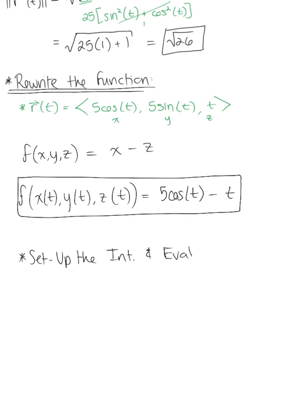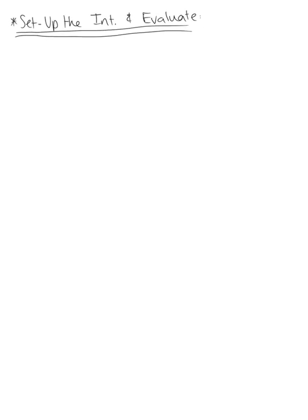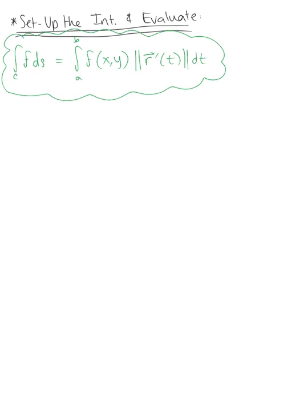And then evaluate. So let me make sure we have enough room here. So we're ready to take our line integral, our given line integral in terms of arc length, and convert this to its scalar value function form. So this is the conversion formula we're using. So here we started off where we were given the integral over c of x minus z ds. And we are rewriting this as the integral from minus 2 pi to 0 of 5 cosine of t minus t, multiplied by the square root of 26 dt.